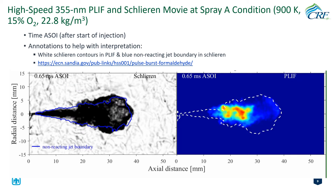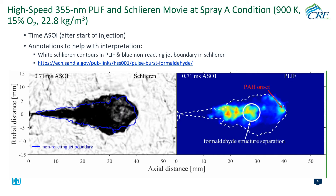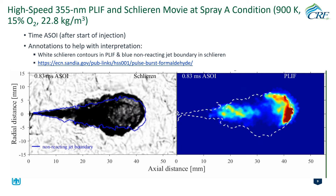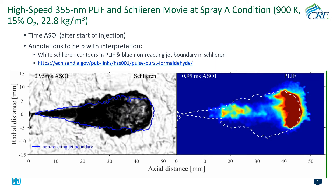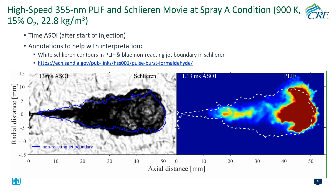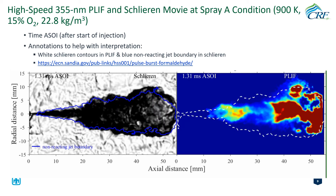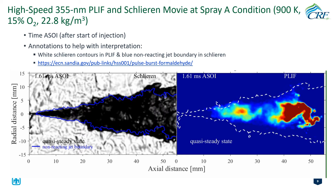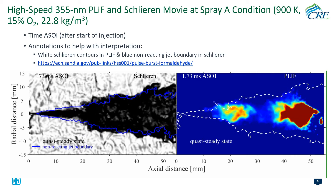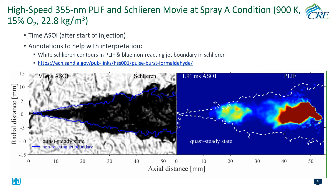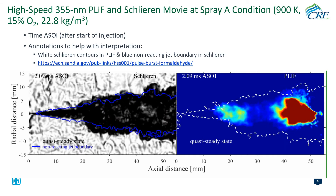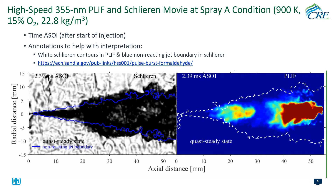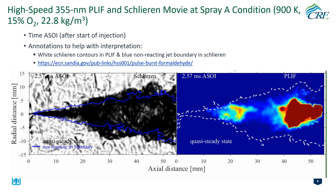At later timings, the spray forms classical vortex structures with polyaromatic hydrocarbon signals downstream, and the flame eventually stabilizes and reaches quasi-steady state. Upstream LIF pockets are clearly from formaldehyde, whereas downstream signals are from polyaromatic hydrocarbons. There are many interesting features and structures revealed by this high-speed measurement.